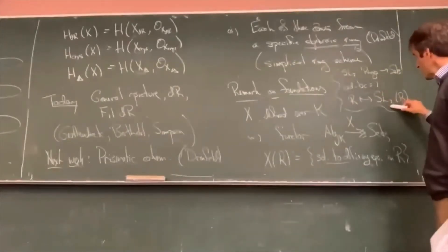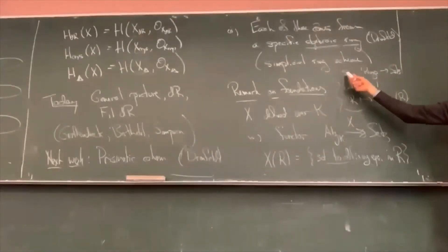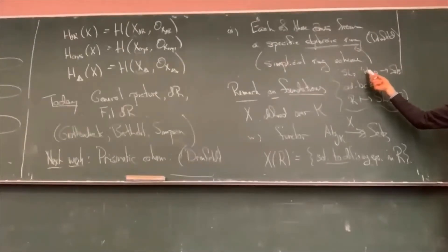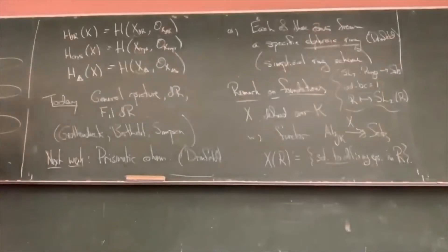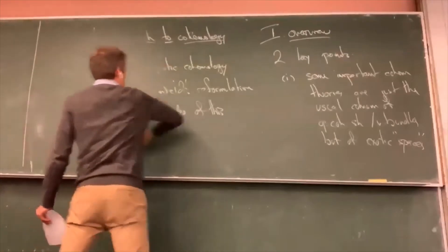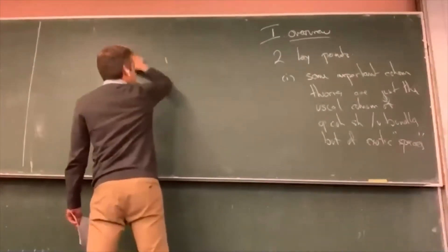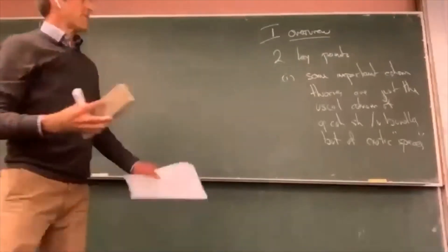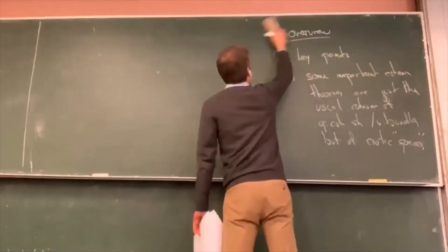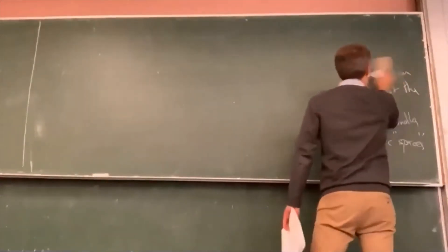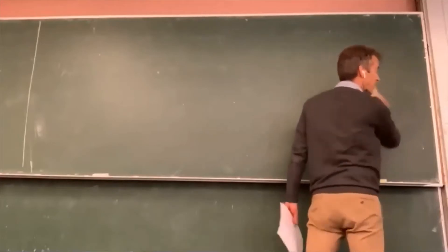Soon I'll start considering algebraic rings. These will be functors which take as input a ring and whose output is another ring. All my rings are going to be commutative. Two-by-two matrices is not good, but we could have matrices of a specific upper-triangular form — that's a nice commutative ring. That would be two-dimensional affine space with a ring structure.